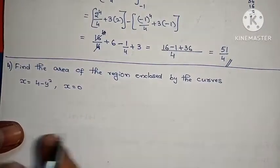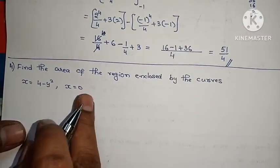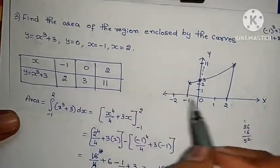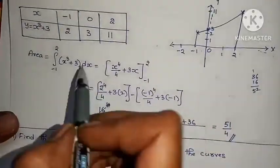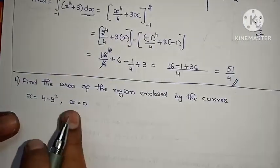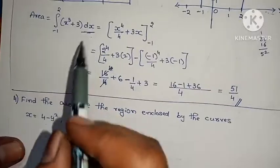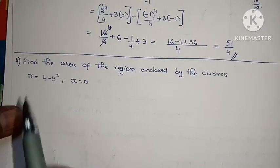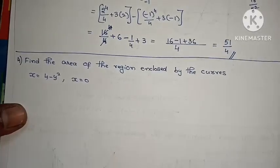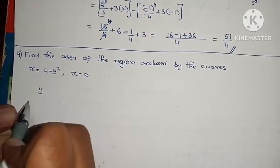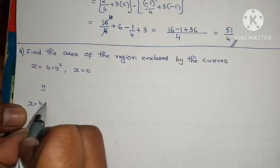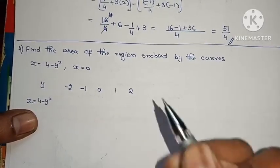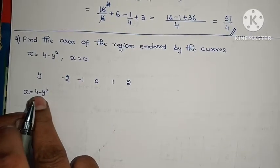Find the area of the region enclosed by the curves x = 4 − y² and x = 0 (the y-axis). Here x = 0 is equal to the y-axis. Table of values: when y = 0, x = 4; when y = 2, x = 4 − 4 = 0; when y = 1, x = 4 − 1 = 3. So values: y = 2, x = 0.